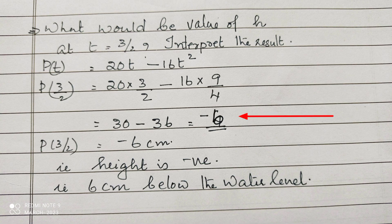That means p(3/2) = -6 centimeters. That means the height is negative. It says that 6 centimeters below the water level.